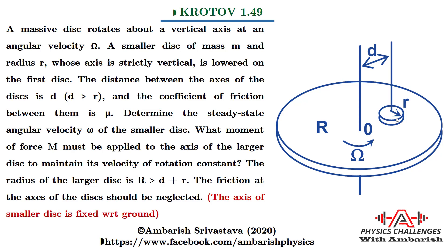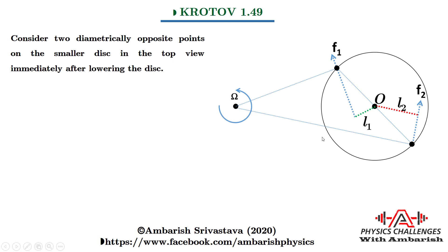Let's look at what's happening exactly — the dynamics of the problem. Consider the smaller disc that I have drawn; the bigger disc is not shown but is rotating with capital Omega. When the smaller disc is first lowered, every point of it has zero velocity. The point of the bigger disc just below any given point on the smaller disc will be moving in a certain direction relative to the smaller disc, so friction forces act accordingly on the smaller disc.